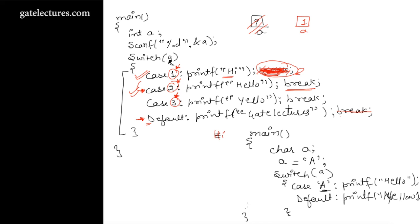Whenever the program executes, since capital A is stored in variable a, the switch statement matches case A — case A is true. So we are going to print "hello" and then continue executing until we find a break statement or reach the default case. This is a very simple example. Let me now take some GATE questions on the switch statement.